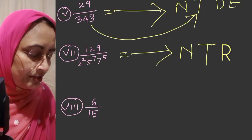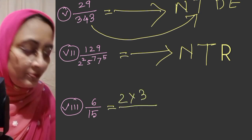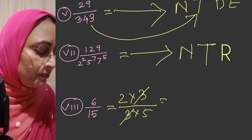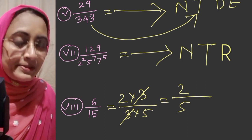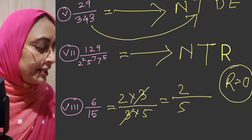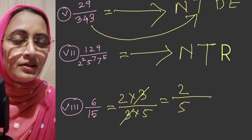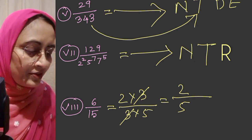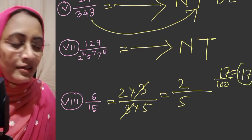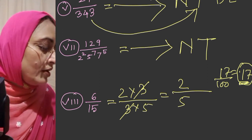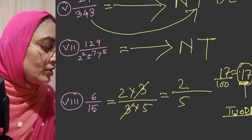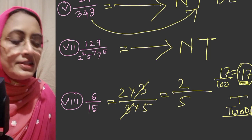Next: 6 by 15. We cancel out common factors: 6 by 15 simplifies, and we can write the denominator in the form 2 to the power m into 5 to the power n. Therefore this rational number has a terminating decimal expansion. For example, 17 by 100 equals 0.17 — there are 2 digits to the right of the decimal point, so it terminates after 2 decimal places. This one similarly has a terminating decimal expansion and terminates after 2 decimal places.